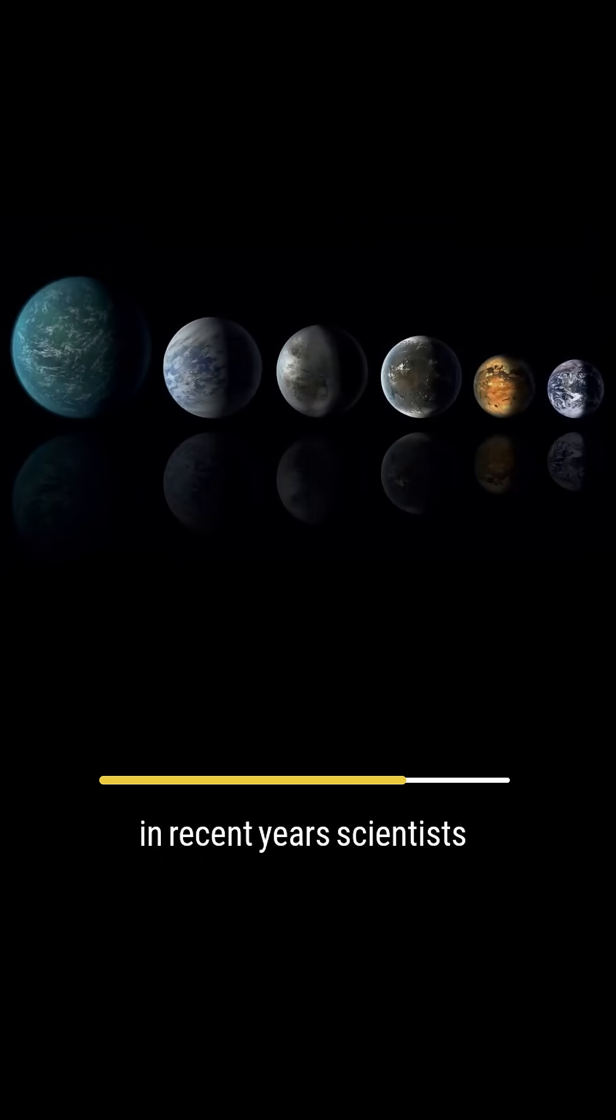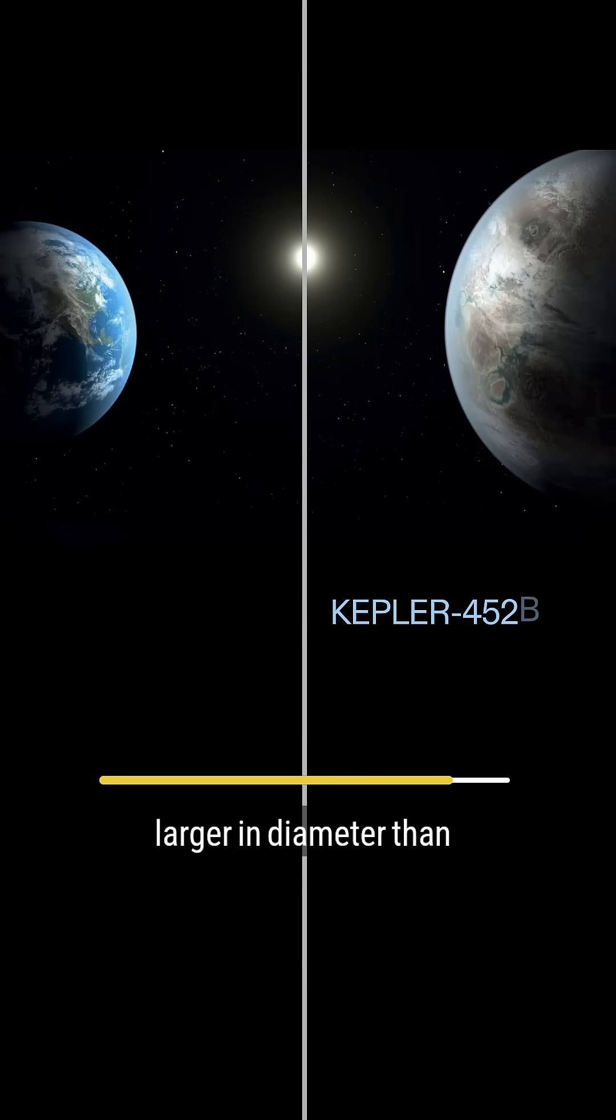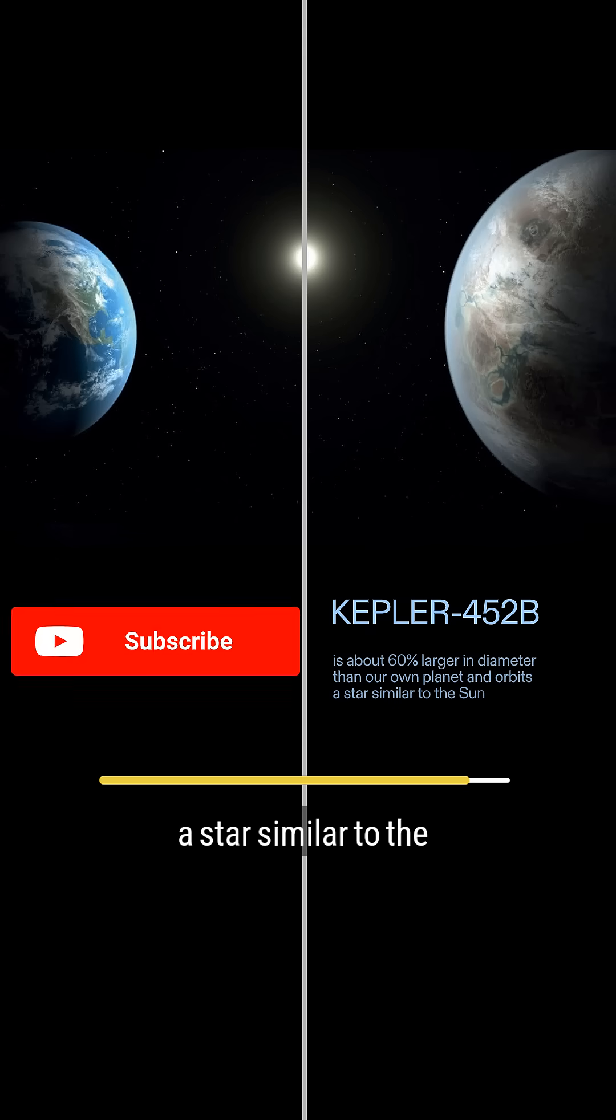In recent years, scientists have also discovered a number of exoplanets that are eerily similar to Earth. One of these exoplanets, known as Kepler 452b, is about 60% larger in diameter than our own planet, and orbits a star similar to the sun.